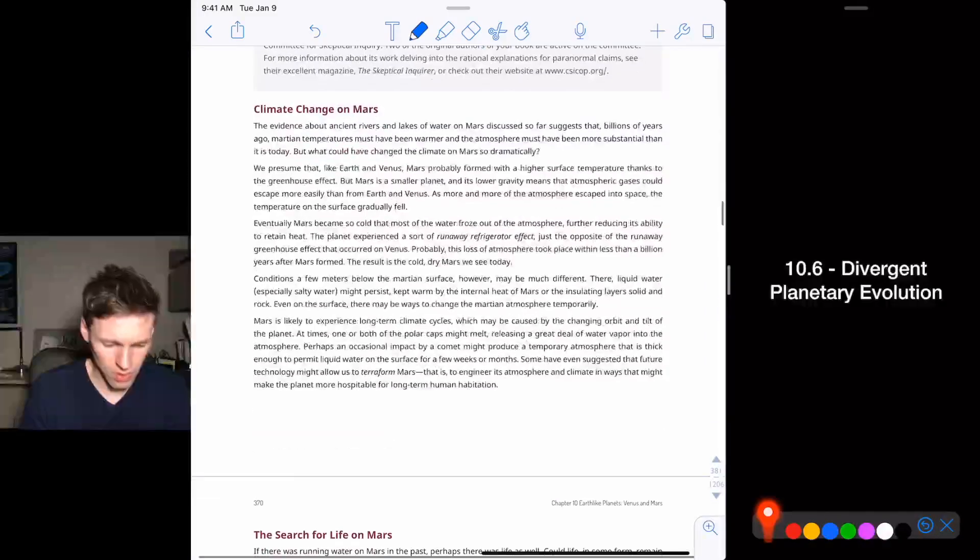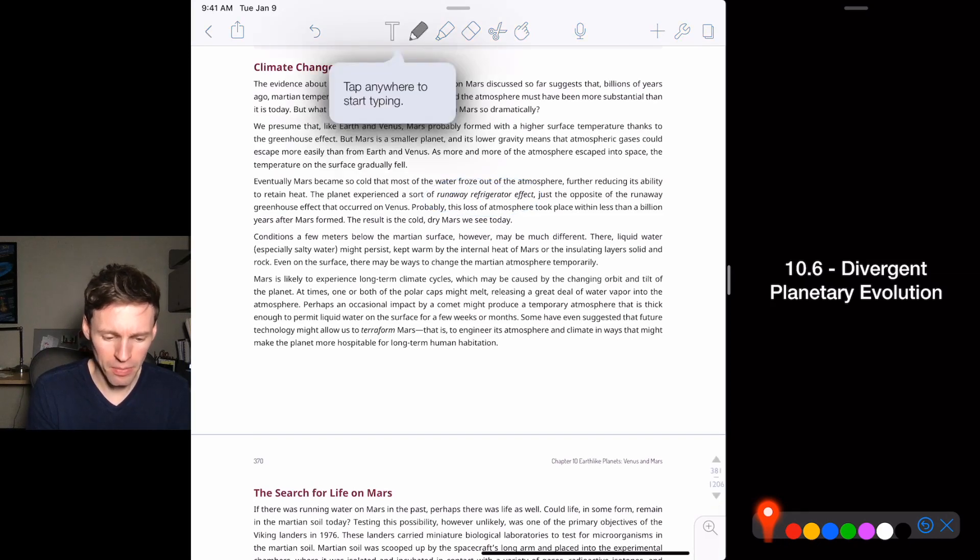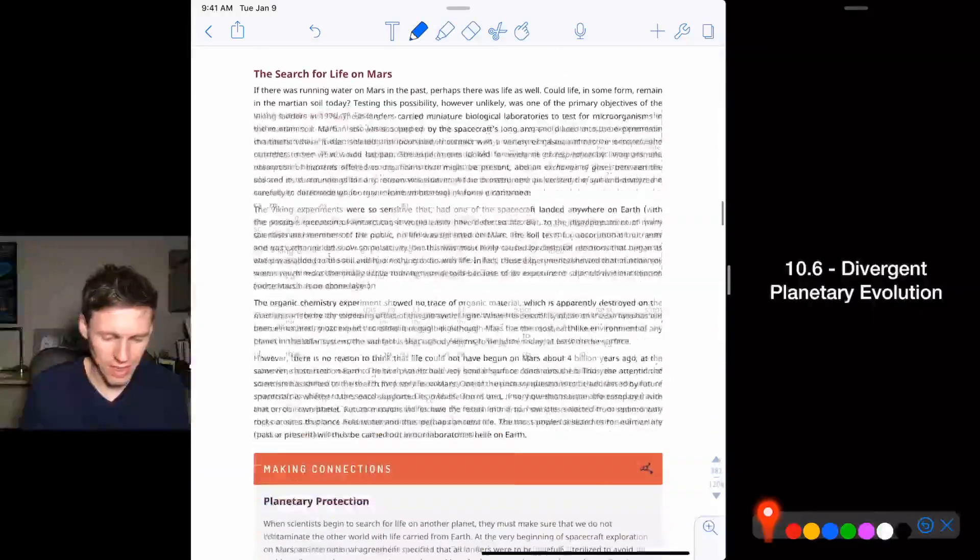Okay. So climate change on Mars. Obviously something happened and froze the thing. So instead of a runaway greenhouse effect, we have a runaway refrigerator effect. So something happened, the atmosphere evaporated, puffed off, disappeared. The sun blew it away over time, the solar wind, and there's not enough atmosphere to keep it warm enough so it has the opposite effect. So this is kind of amazing.